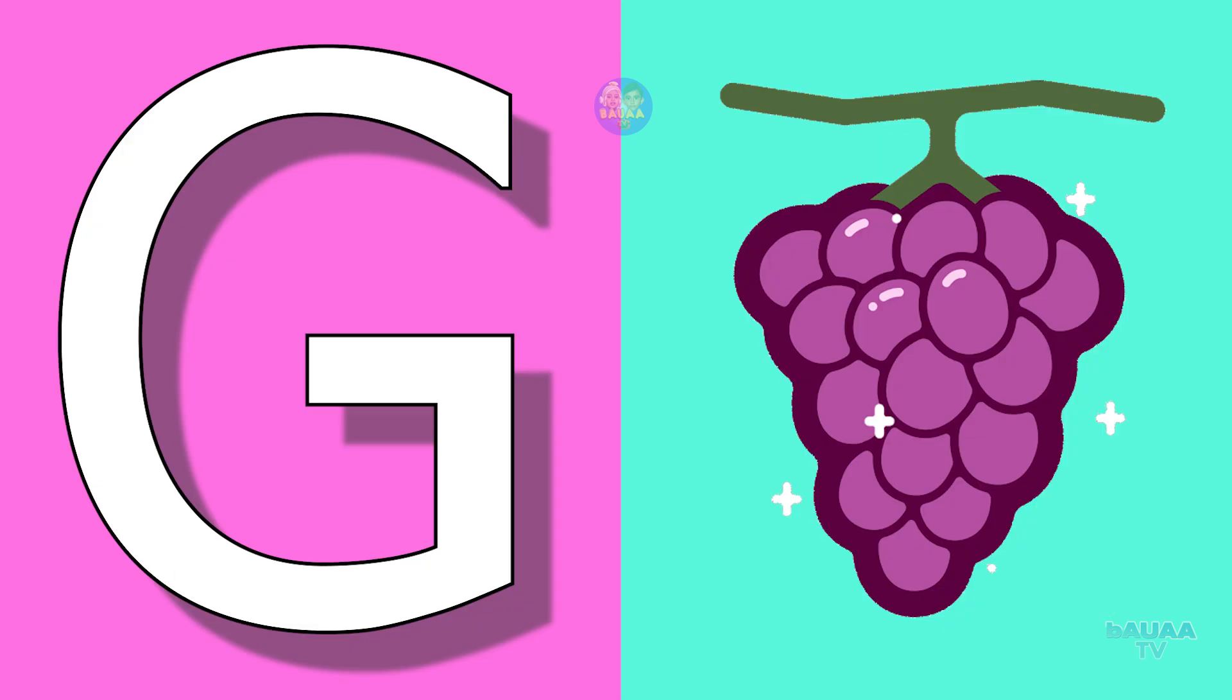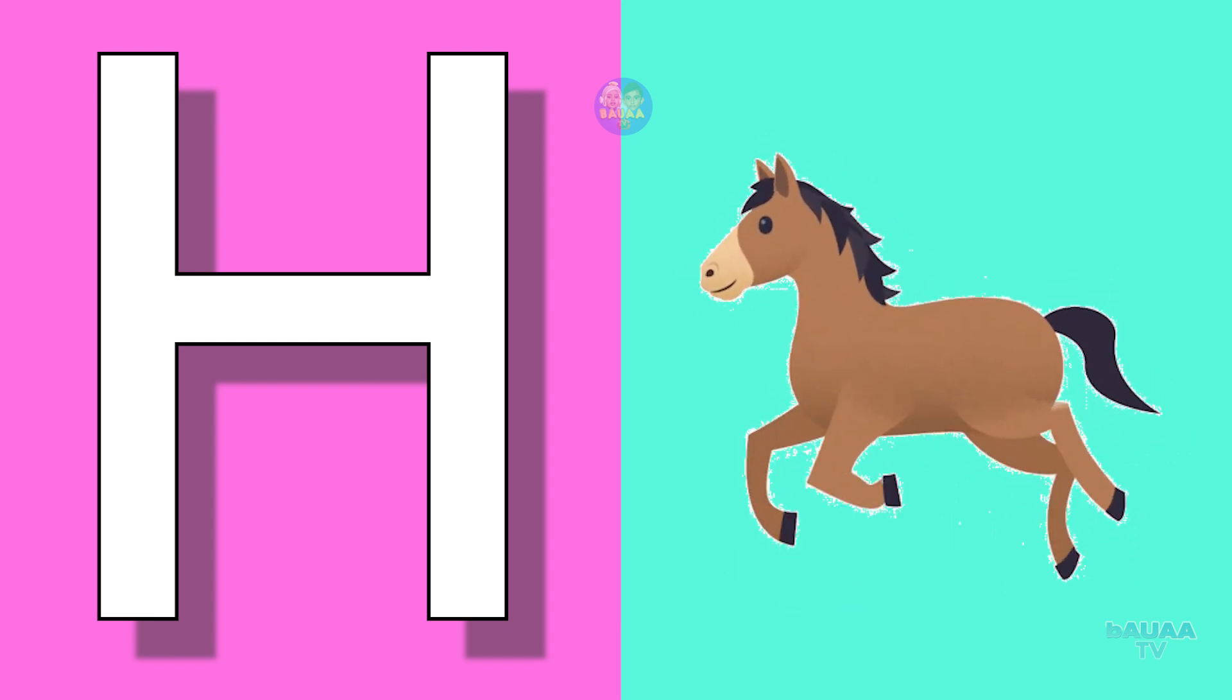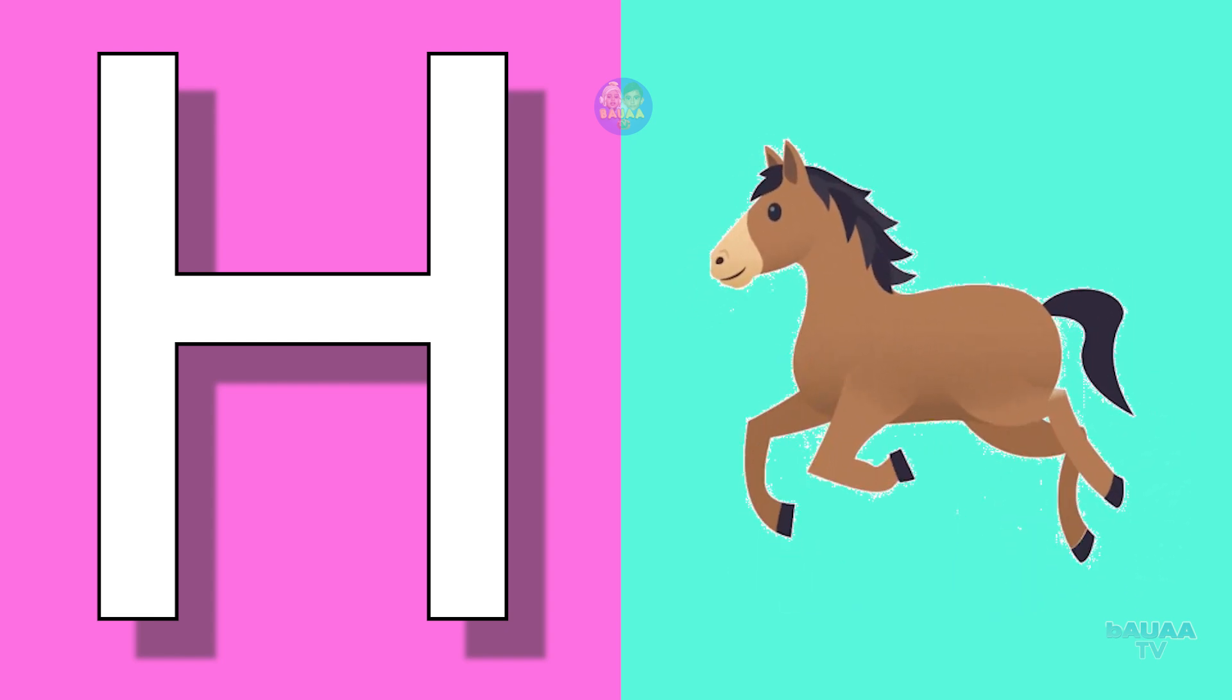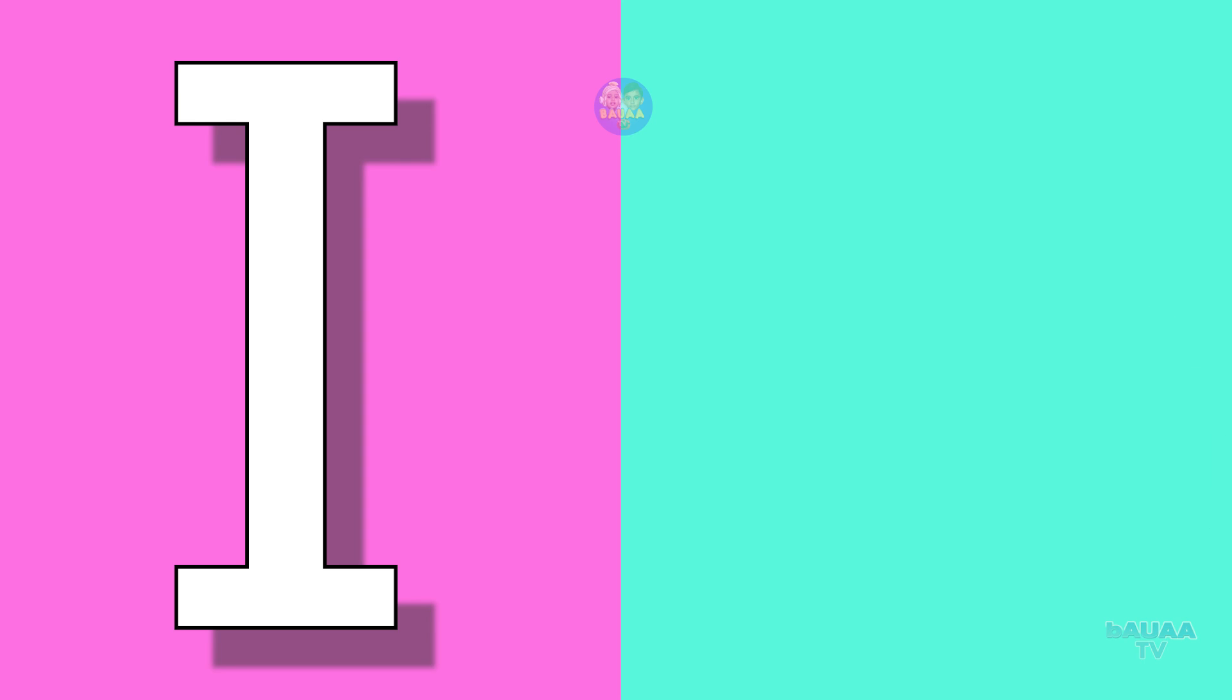Fish means machli. G for grapes, grapes means angoor. H for horse, horse means goda. I for ice, ice means barf.